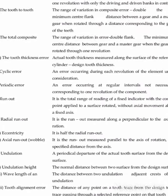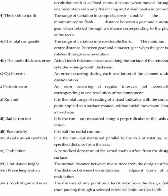Now we will see cyclic error. Cyclic error is the error occurring during one revolution of the element under consideration. When an element completes one revolution, the error which is caused is called cyclic error.